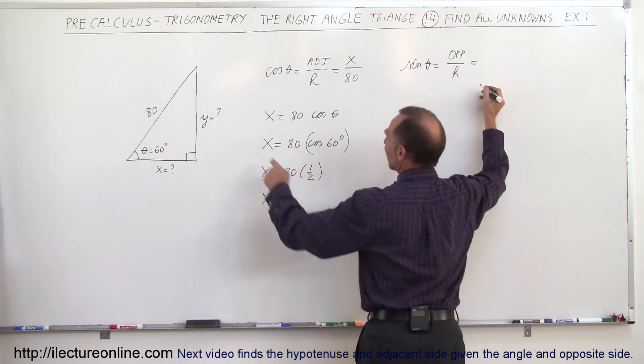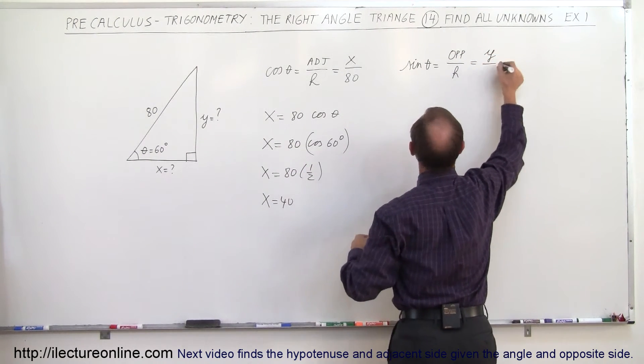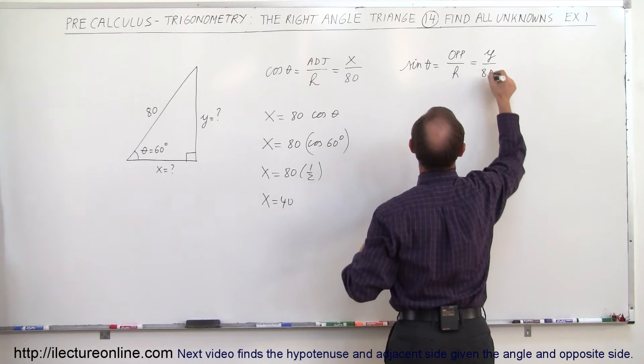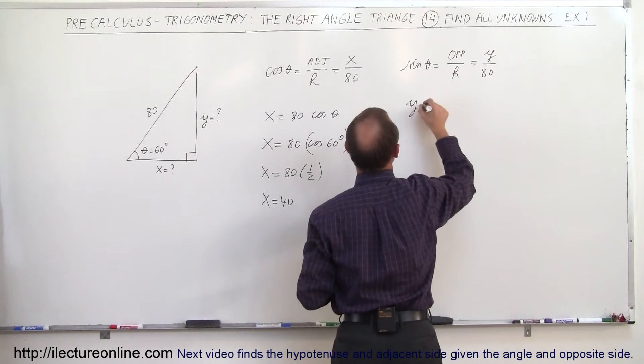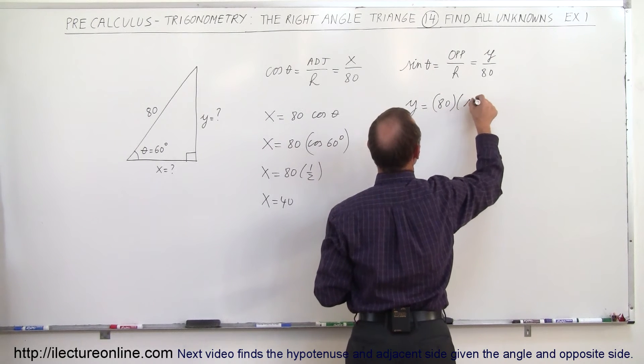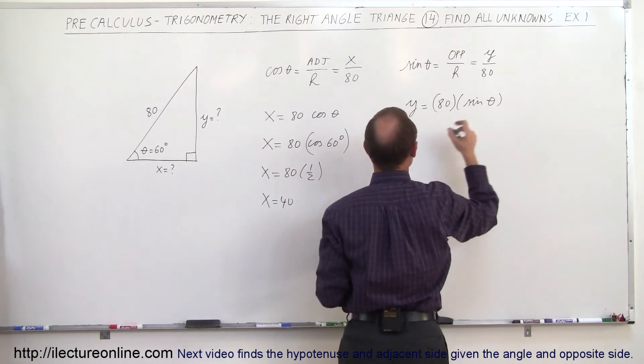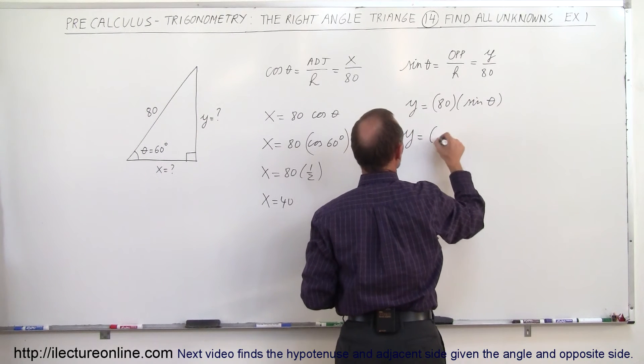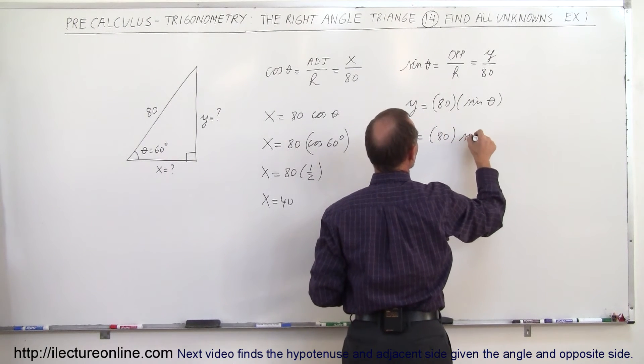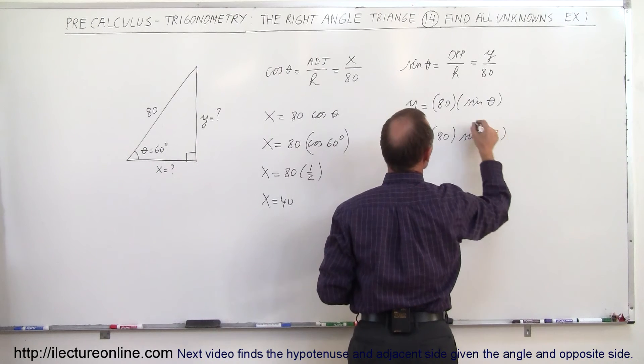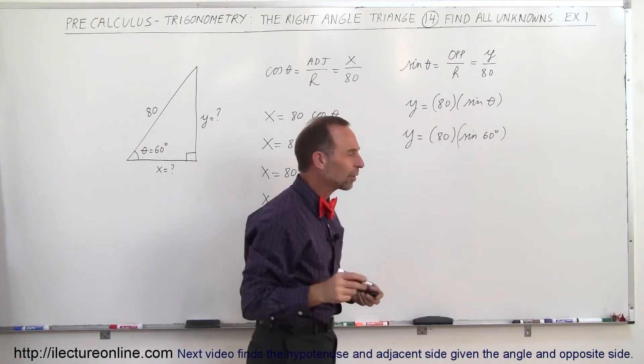So in this case, the opposite side is y and the hypotenuse is equal to 80. Which means that y is therefore equal to 80 times the sine of theta. And since theta is given to us as 60 degrees, y is therefore equal to 80 times the sine of 60 degrees. And the sine of 60 degrees is the square root of 3 over 2.